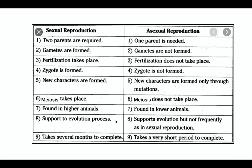Sexual reproduction is found in higher animals and plays a major role in the evolution process. Asexual reproduction supports evolution only a little. Another interesting point: sexual reproduction requires a longer time — for example, several months — whereas asexual reproduction requires a very short period of time to produce offspring.